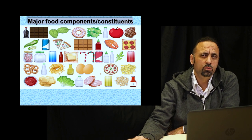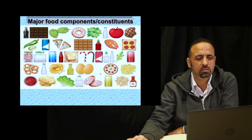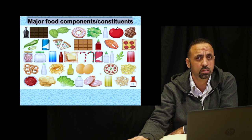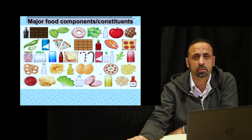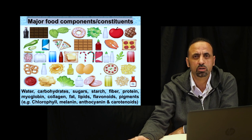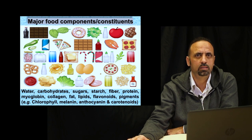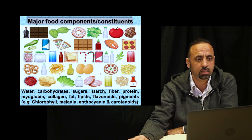We need to know in all kinds of food — either solid or liquid, fresh or processed — what we are going to measure. We are going to measure different components and constituents. All of these constituents could be water, carbohydrates, sugars, starch, fiber, protein, fat, and even pigments like chlorophyll, melanin, and anthocyanin. All of these components need to be identified before carrying out your experiments, because the spectral information you obtain is much related to the molecular bonds of the composition of interest.